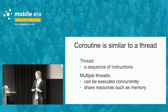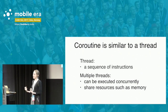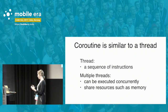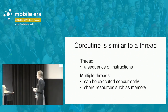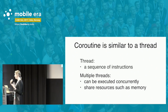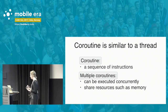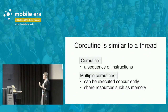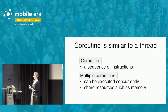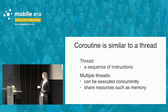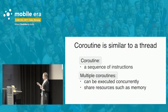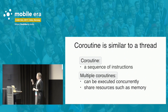Now is the right time to discuss what a coroutine actually is and compare threads and coroutines — their similarities and differences. A coroutine is a very similar concept to a thread. A thread is just a sequence of instructions, and multiple threads can be executed concurrently and share resources. The same description applies to coroutines. However, coroutines are much more lightweight than threads. You can create far more coroutines than threads — a thread takes 2–3 megabytes of memory, while a coroutine is just hundreds of kilobytes.